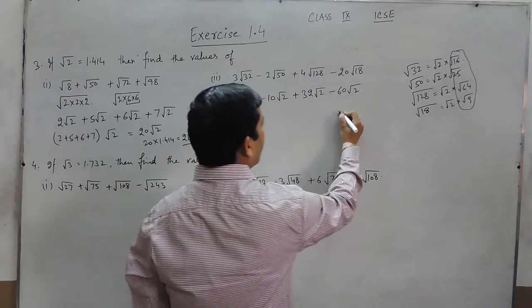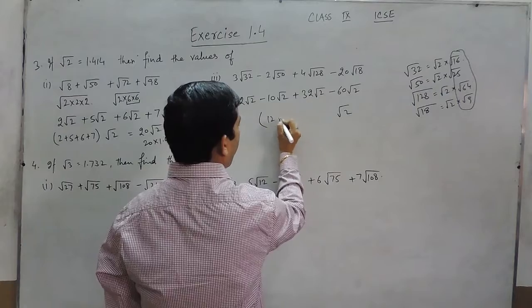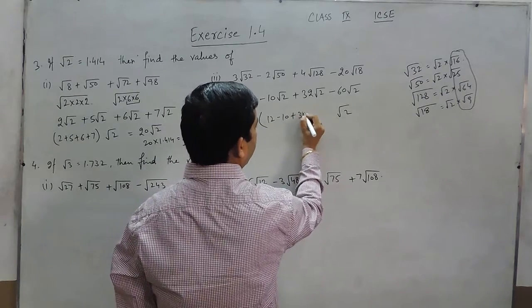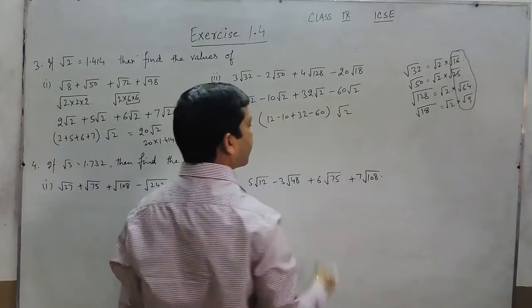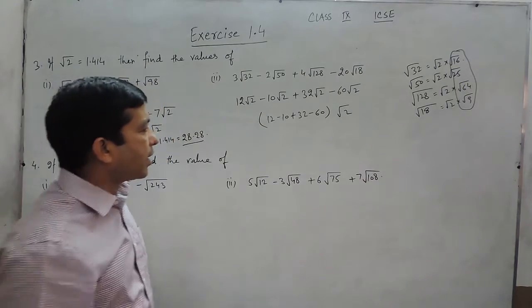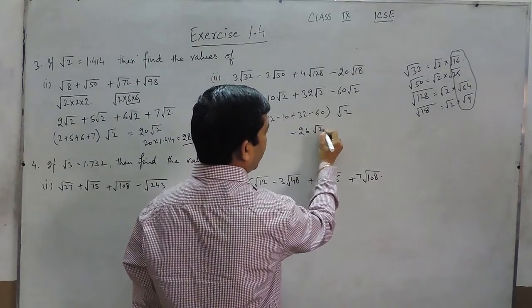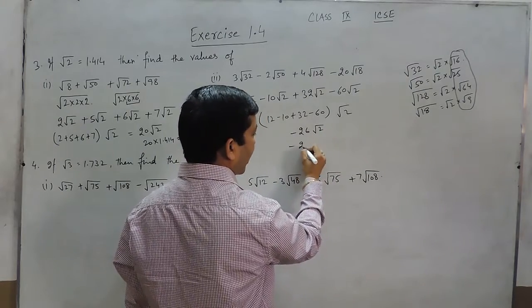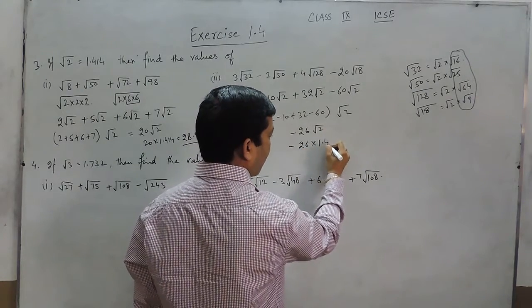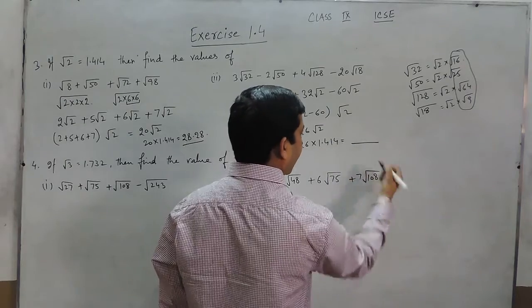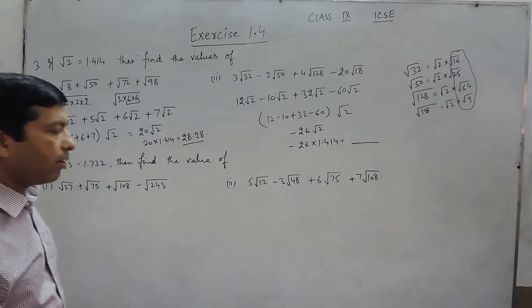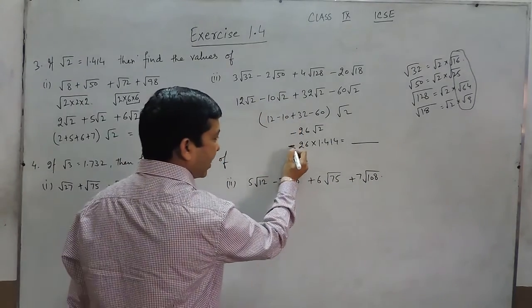Again √2 can be taken as common. So 12 - 10 + 32 - 60, when I calculate it, is -26√2. So -26 × 1.414, and hence we can write the answer in this question which is basically negative in their value.